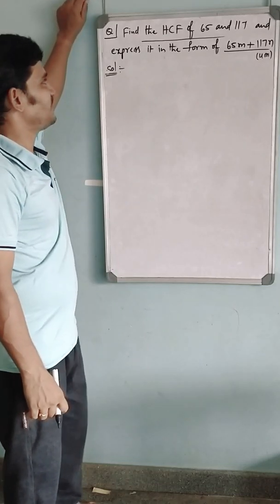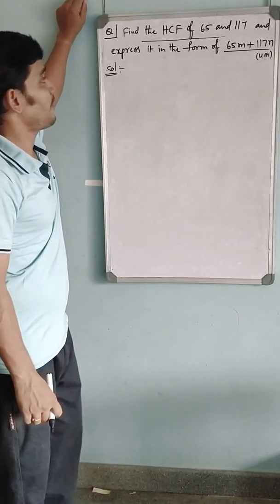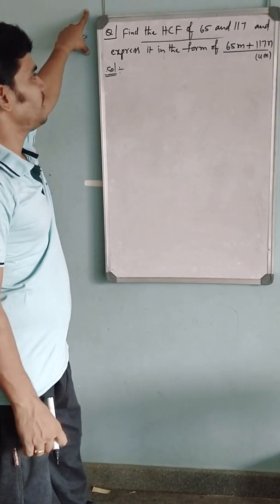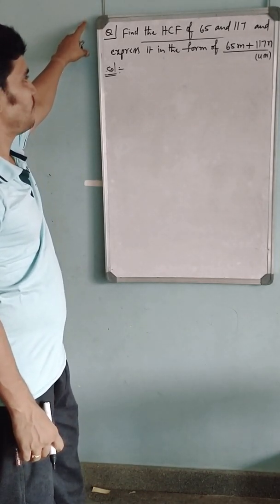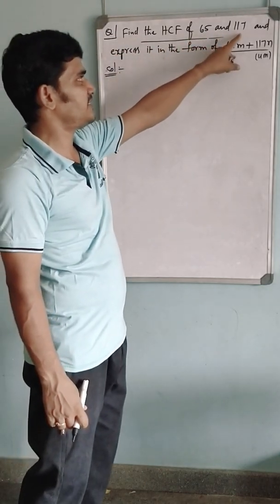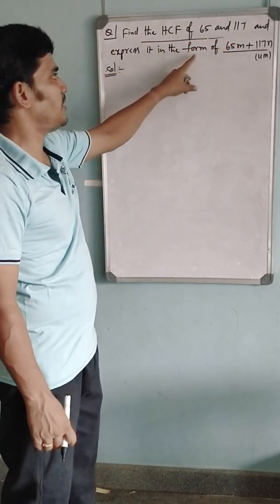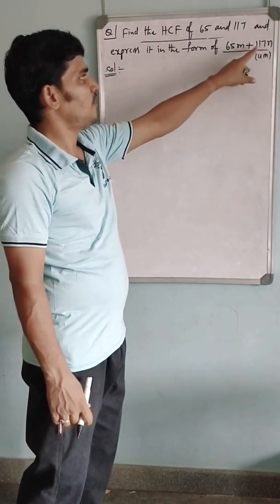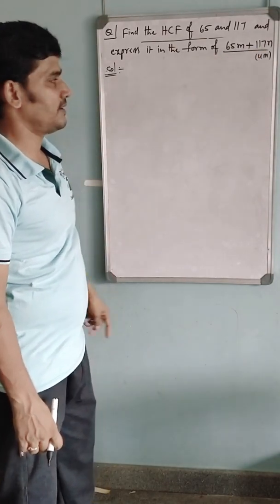Hello friends, welcome to NGMAS channel. Today I want to discuss a question on the Euclid division algorithm. The question is: find the HCF of 65 and 117 and express it in the form of 65M plus 117N.